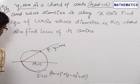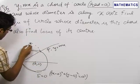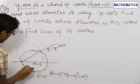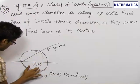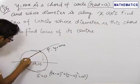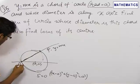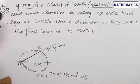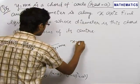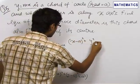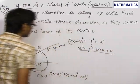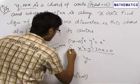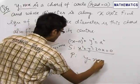This chord is AB, and we want to find the equation of that circle which has diameter AB. So the equation of the given circle is x squared plus y squared minus 2ax equals 0, and our line P is y minus mx equals 0.